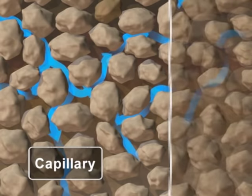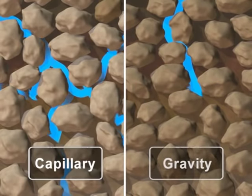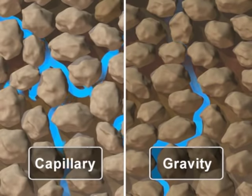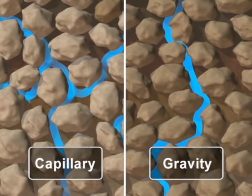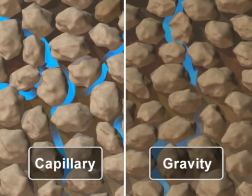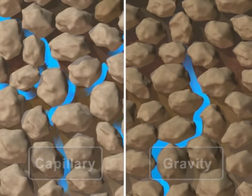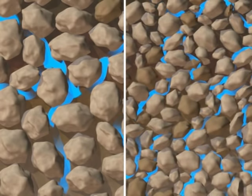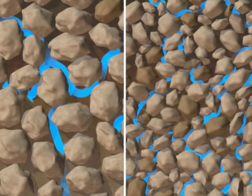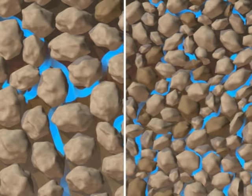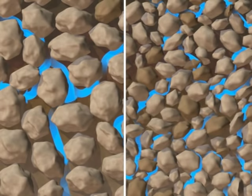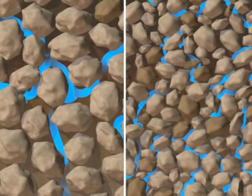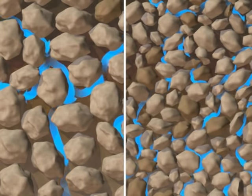Gravity is the primary water-moving force in saturated soils, while capillary action is the primary force in unsaturated soils. Capillary force is greatest in soils with small pores, and water moves more slowly through these soils.